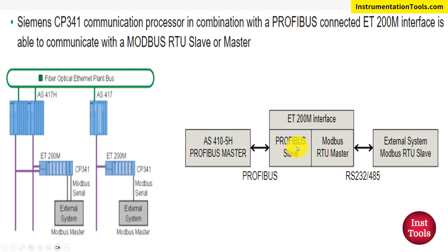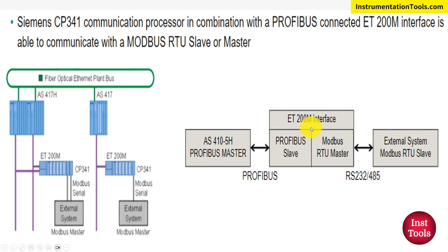The data is converted into Profibus data packets. As we already know, Profibus communicates with master and slave. The ET200M acts as a slave device and the Automation Station or PLC acts as the master device. A protocol conversion is happening at the ET200M level. How the data transfers and how the request happens will be discussed in the next slide.